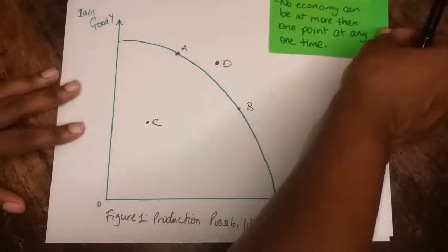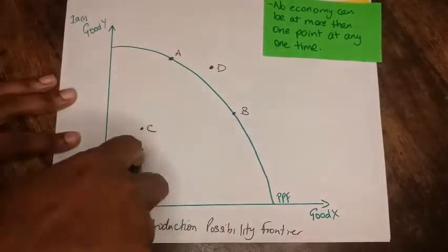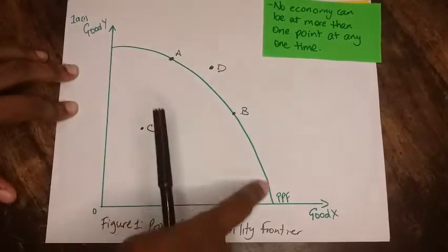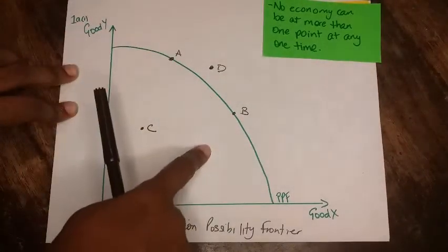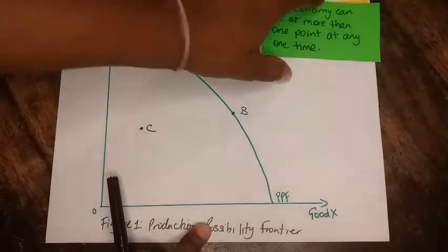Similarly for this, you can't be at more than one point at the same time - you have to choose. So you can't be at both points A and B and C at the same time. You have to make a choice between all the different combinations that you can get along the curve and all the combinations within as well. So this is where choice comes in. For opportunity cost...